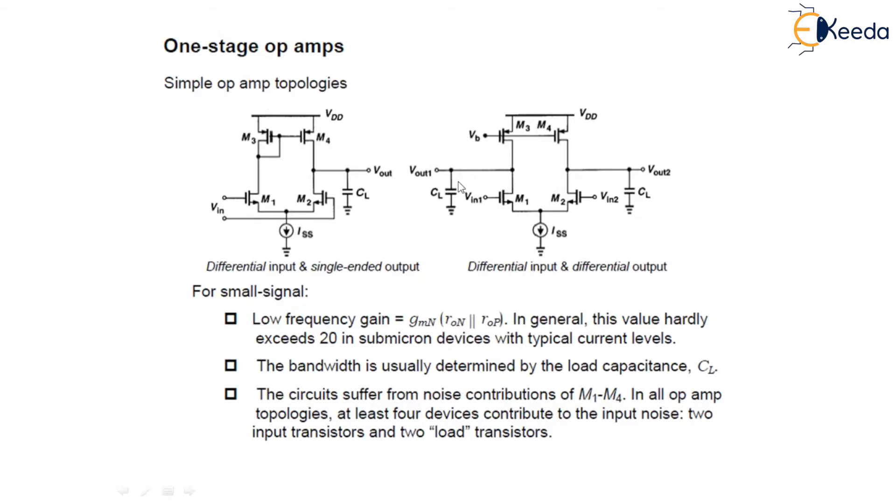This is the critical difference in terms of the stability of feedback system. Both of these figures suffer noise contribution due to M1, M2, M3 and M4. In all op-amp topologies, at least four devices contribute to the input noise: two are the input transistors and the other two are the load transistors.